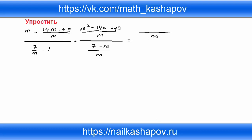Остаётся общая дробная черта, и мы разложим в обратном порядке: получается (m минус 7)(m минус 7), то есть (m минус 7) в квадрате. А здесь у нас вторая дробь: (7 минус m) делённое на m. Обратите внимание — дробная черта обозначает деление, поэтому дробь (m минус 7)² делённое на m нужно разделить на дробь (7 минус m) делённое на m.